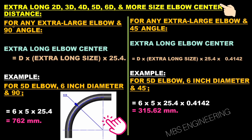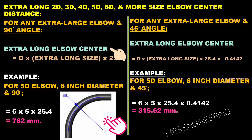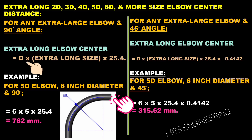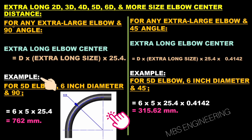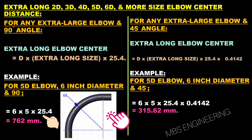Next, we will understand extra long elbow center distance calculations for 2D, 3D, 4D, 5D, 6D, and more. The formula for an extra long 90-degree elbow center distance is: Extra Long Elbow Center = D × Extra Long Size × 25.4. For example, for a 5D elbow with 6-inch diameter at 90 degrees: 6 × 5 × 25.4 = 762 millimeters.